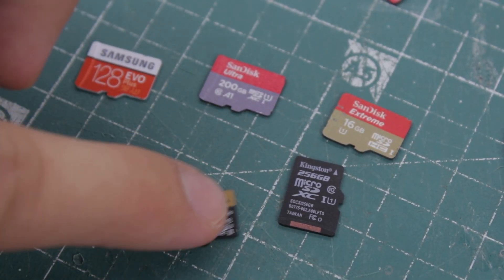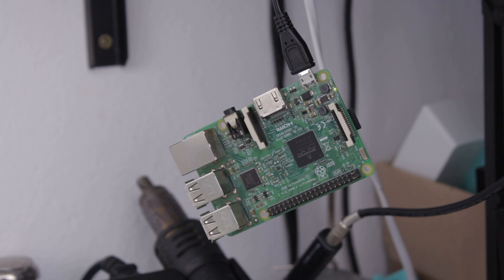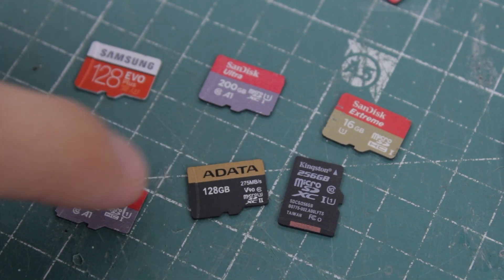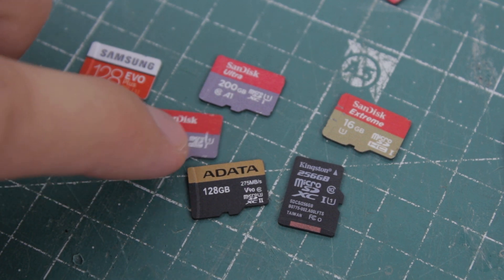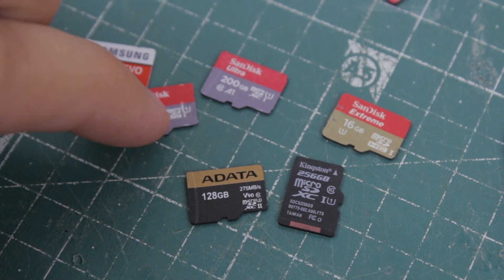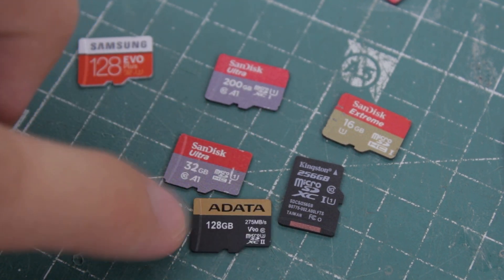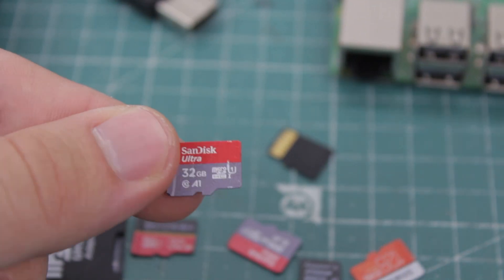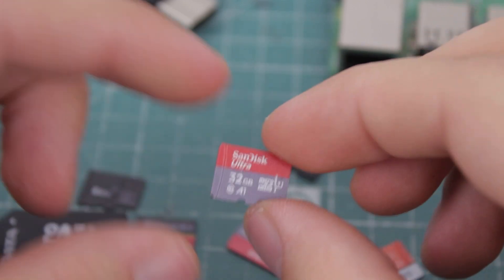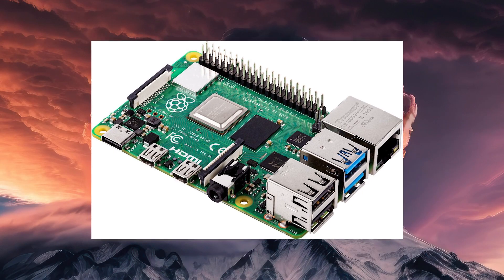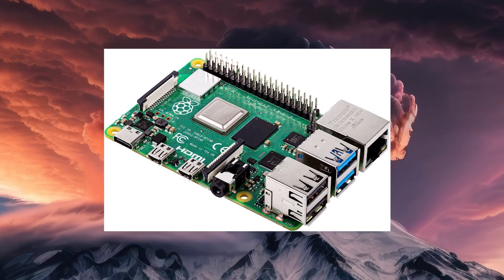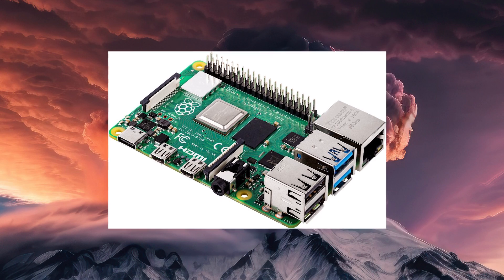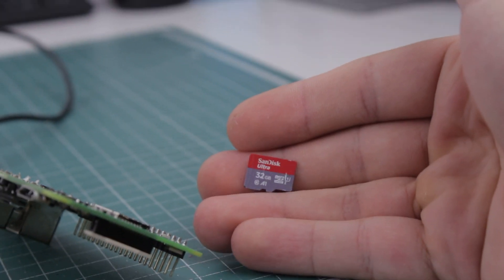Let's talk about capacity. MotionEyeOS can be used to record videos and photos, which are then stored on the Pi. Taking this into consideration, it would be best to get a high-capacity card so you don't have to transfer or delete your files often. My Pi can support a 32GB card maximum, which is not that much. Pi 4, on the other hand, can support up to 2TB, which would be awesome, but I don't have a Pi 4 at hand so I'll have to continue with less storage.